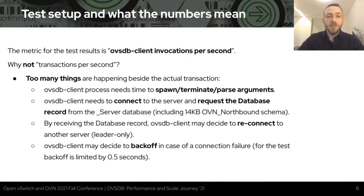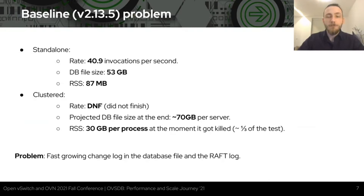Let's take a look at our baseline performance results with OVSDB. Unfortunately, it's not really possible to show good numbers here. The standalone database finished the test with about 40 OVSDB client invocations per second and memory consumption under 100MB, but the database file size grew up to 53GB. For the clustered database, the test did not finish — I had to stop it because the server ran out of RAM and disk space. The projected database file size was around 70GB per server, and memory usage was at about 30GB per process.